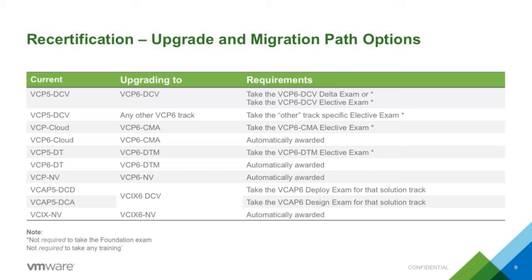For VCP NV to VCP 6 NV, that's one that is automatically awarded. Because of the way the versions came out and the timing, some things are auto-inherited. For the VCIX NV, I took the old version of the VCIX NV and passed it, so I will auto-inherit the VCIX 6 NV without having to take the new VCP 6 deploy exams.